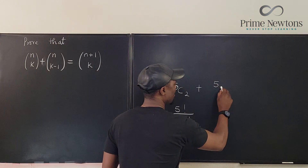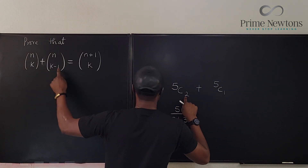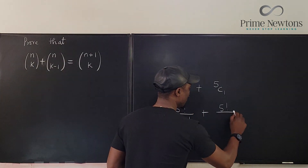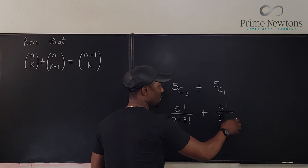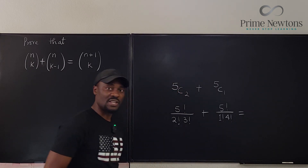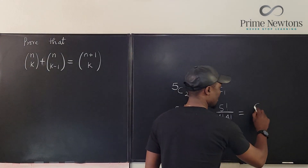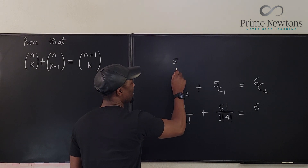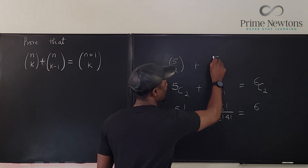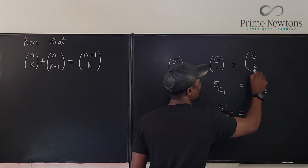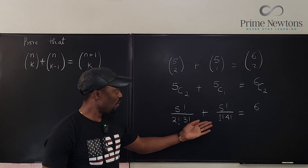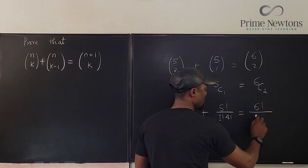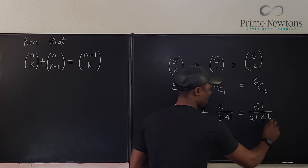This is going to be C(5,1), which is k minus 1 — in this case k minus 1. That makes life a lot easier. Now I can have 5 factorial over 1 factorial times 5 minus 1 factorial, which is 4 factorial. What we're trying to say is that this is going to equal C(6,2). Another notation is: C(5,2) plus C(5,1) equals C(6,2). That would be the literal interpretation of that identity.